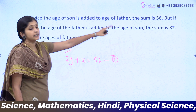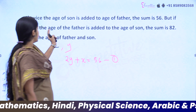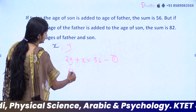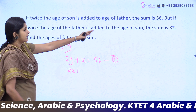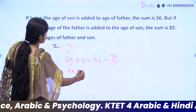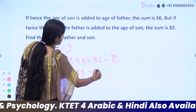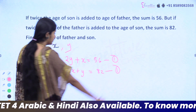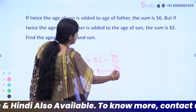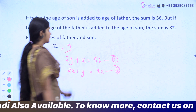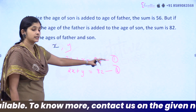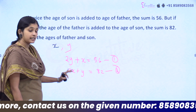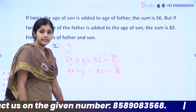The second condition is: twice the age of the father added to the age of the son equals 82. So the second equation is 2x plus y equals 82. We now have two equations to solve.